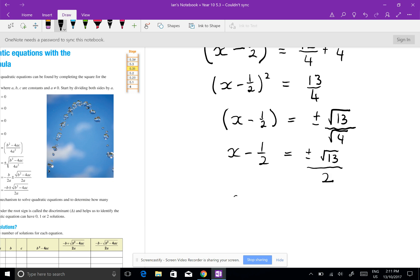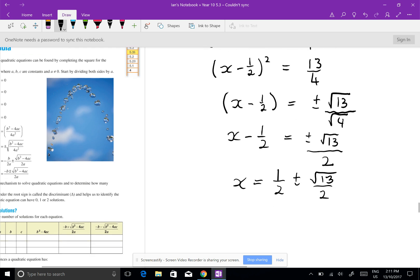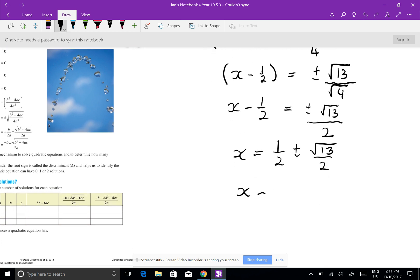x minus a half equals plus or minus root 13 on 2. Now I add the half across. x equals a half plus or minus root 13 on 2. Common denominator so I'll write it all as 1: 1 plus or minus root 13 on 2.